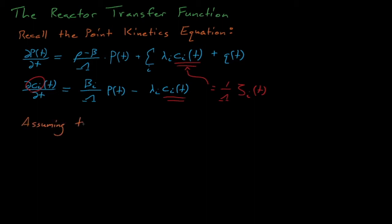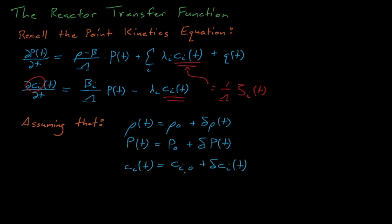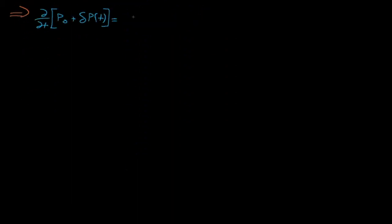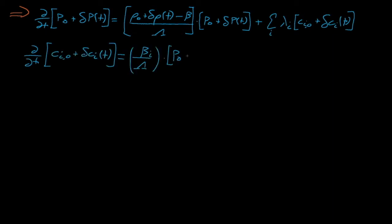Now we'll assume that our system has no inhomogeneous source, which means that Q of T equals zero, and that P of T, rho of T, and C of T are all equal to some constant initial value plus some time-dependent delta value. When we substitute these equations for P, rho, and C into the point reactor kinetics equations, we see that these P-naught and C-naught terms are zeroed by the time derivative.